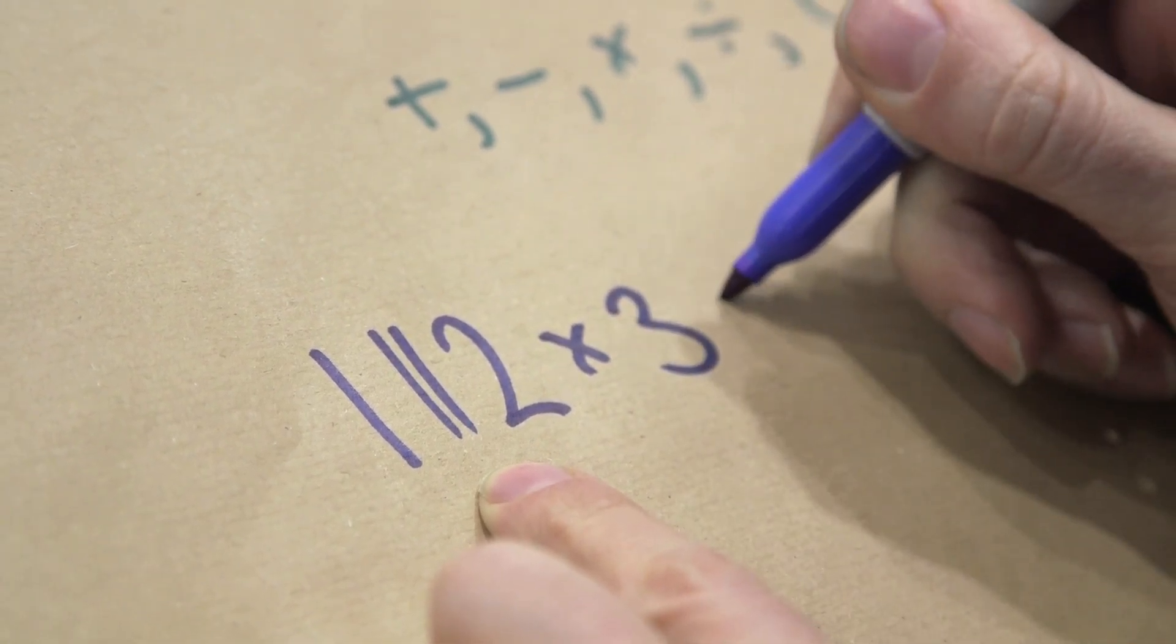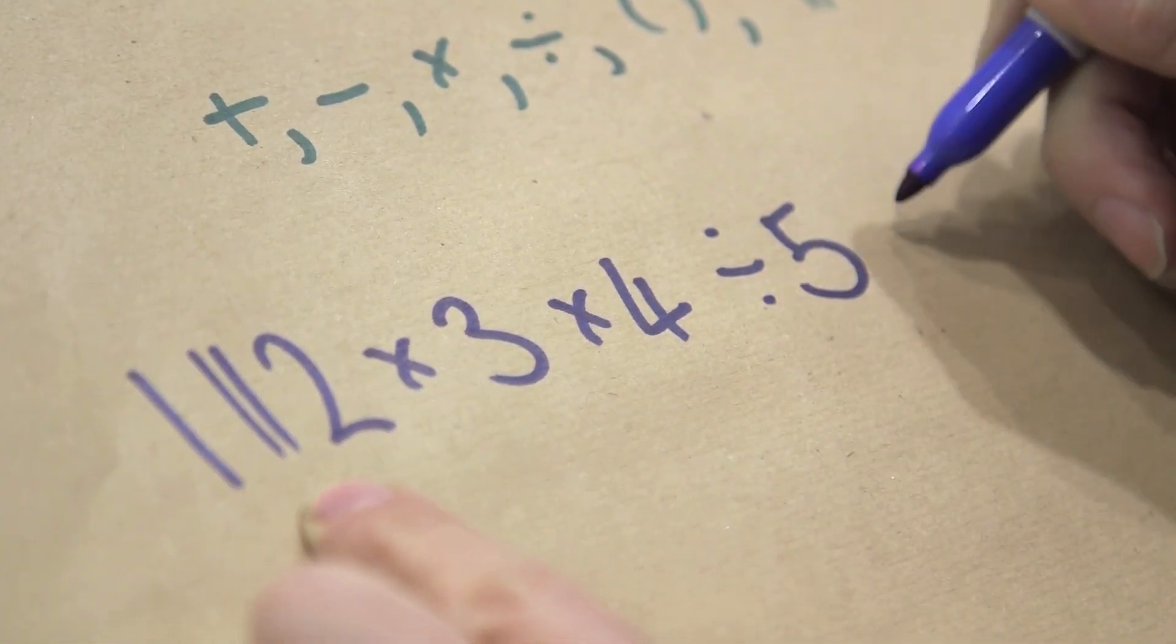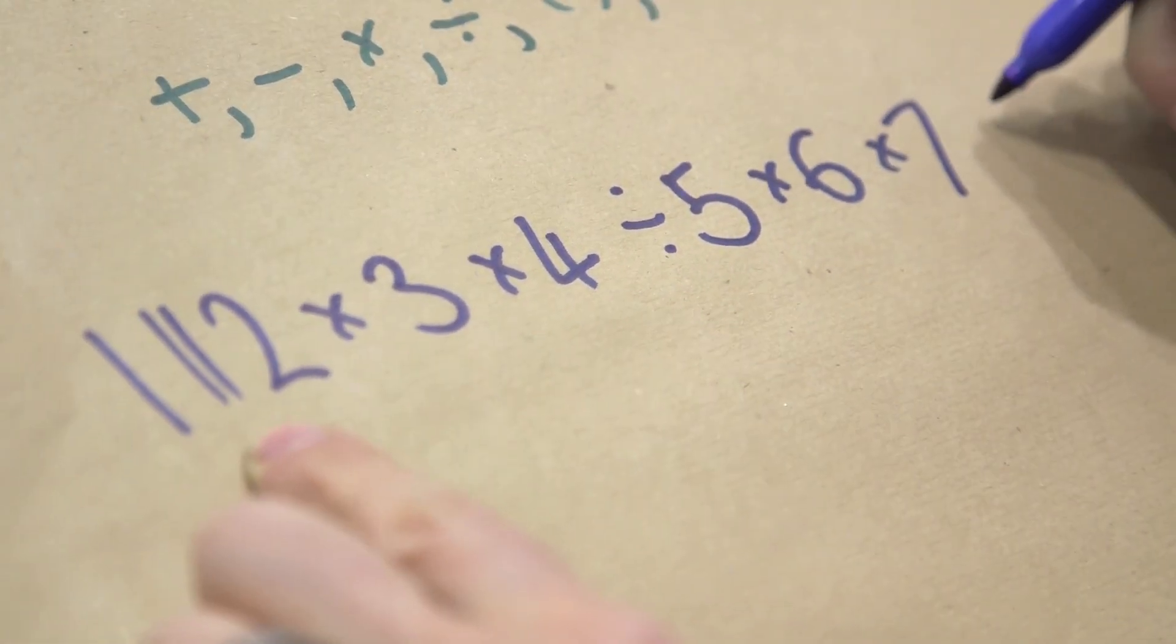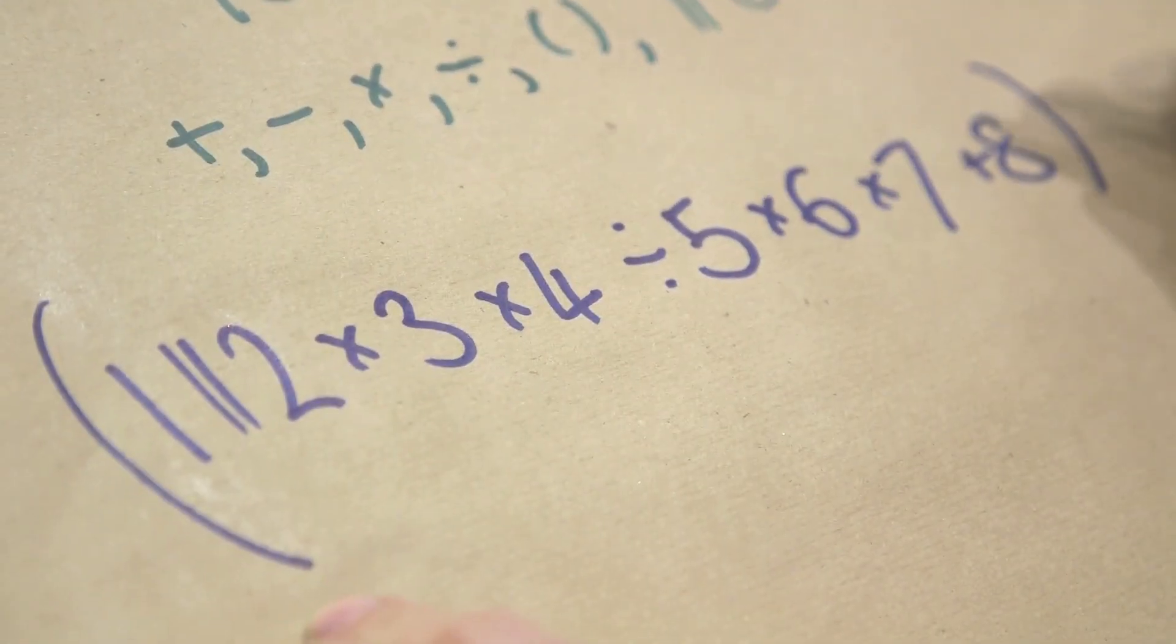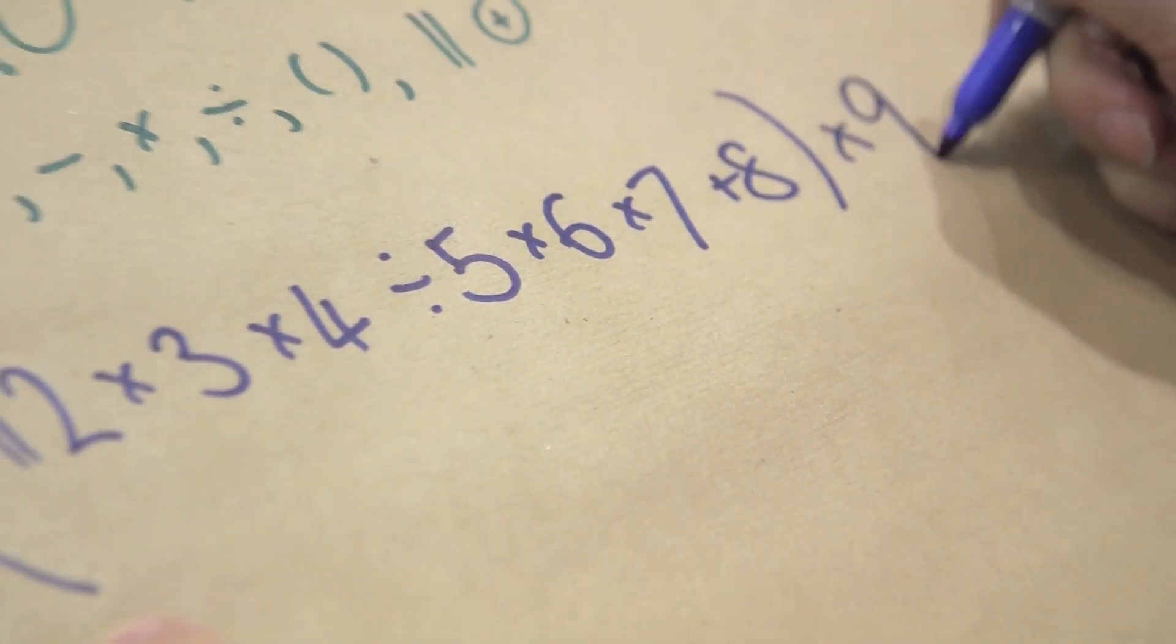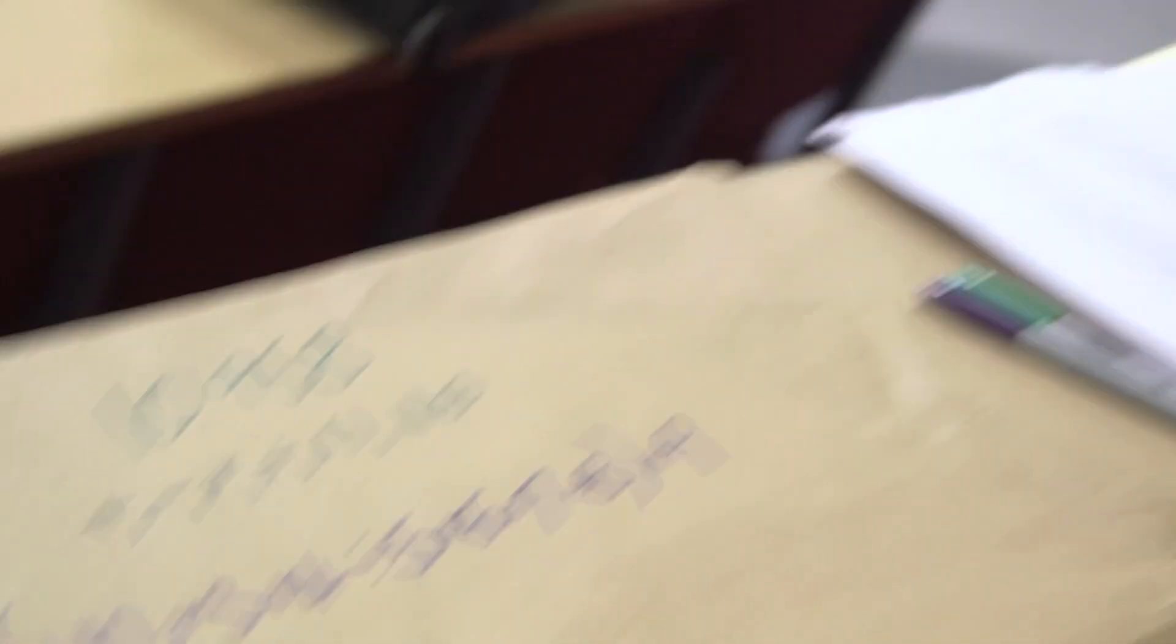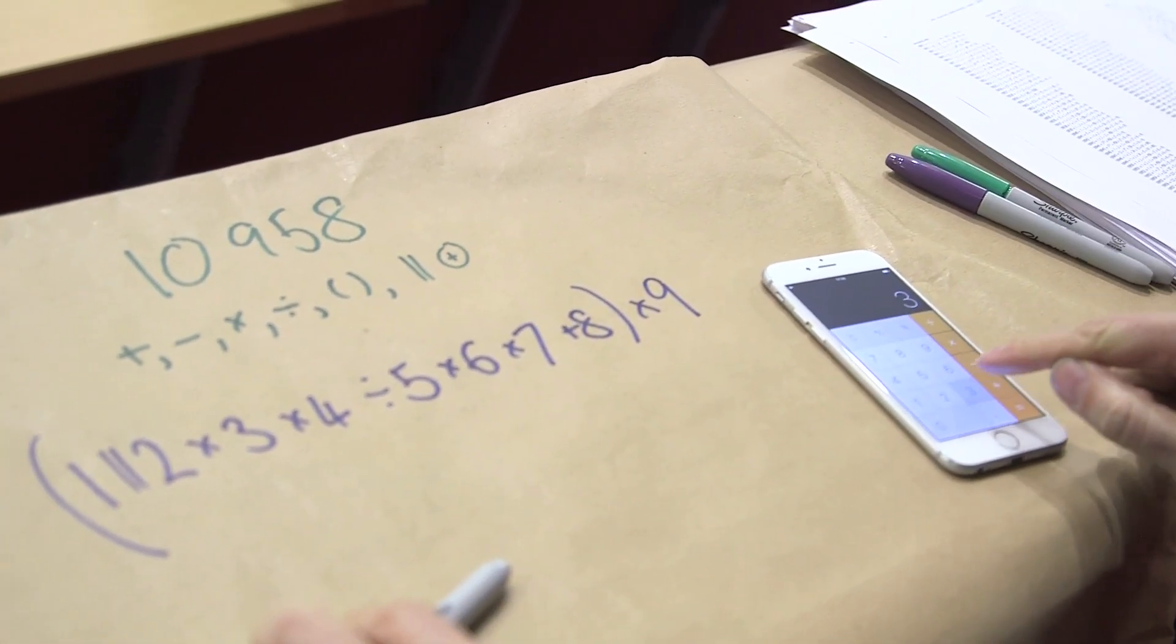Then times 3, times 4, divide that by 5, multiply it by 6, multiply it by 7, add on 8. Put that whole thing in brackets, and then multiply that by 9. Okay, so what does this equal? Well, let's check that. If it equals 10958, you've done it. Exactly. If it equals 10958, we are on. So here we go. So 1 concatenate 2, that's 12.